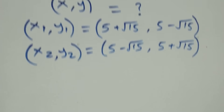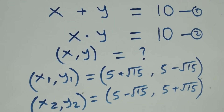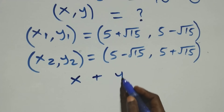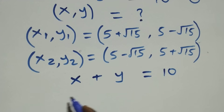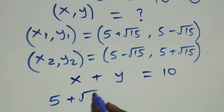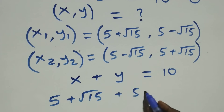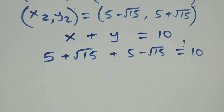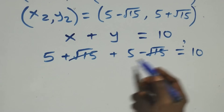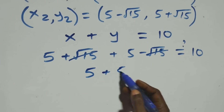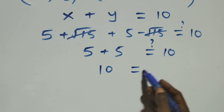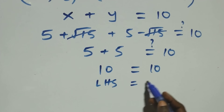Let's verify by checking if the first solution satisfies both equations. In equation one, x plus y equals ten: substituting, we get (five plus root fifteen) plus (five minus root fifteen). The root fifteen terms cancel, giving five plus five equals ten — left hand side equals right hand side.